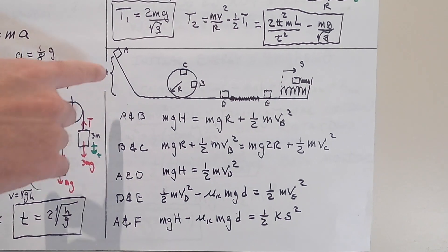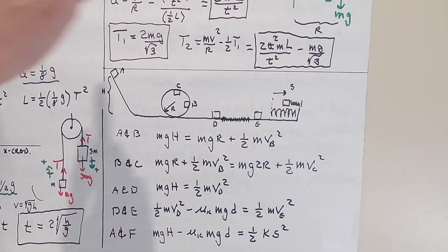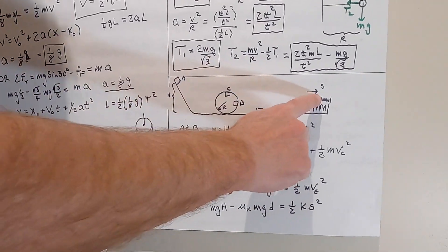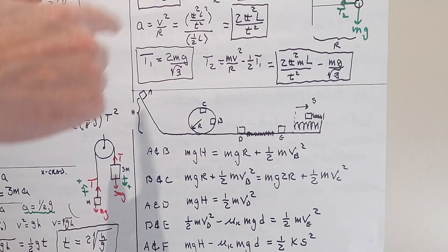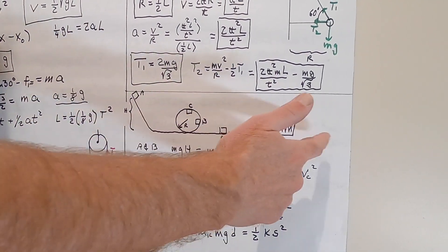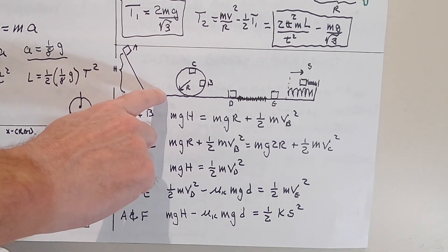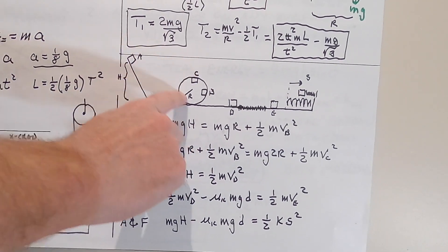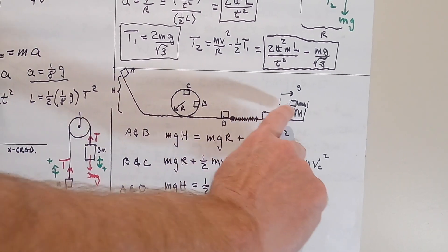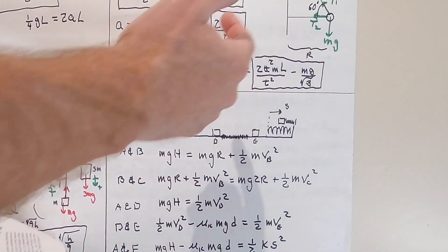If I had asked you to calculate the total work from A all the way to F, it would be zero, because the speed at both A and F is zero — the change in kinetic energy is zero. If you added up all the individual works: gravity from A to F gave positive work; the loop gave and took away energy; friction gave a negative contribution; and the spring work would have been negative because it slowed the block down. They all add up to zero.